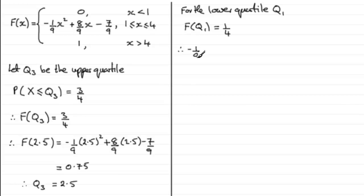So we can just say that this quadratic expression here must equal a quarter. So therefore minus one ninth x squared plus eight ninths of x minus seven ninths should equal a quarter, and we solve this for x, x being Q1. You might want to try finding Q3 as well by the method that I'm going to use here, only you'd put this equal to three-quarters.